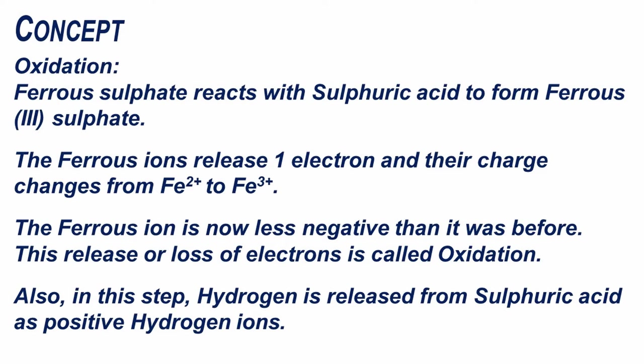Oxidation: Ferrous sulfate reacts with sulfuric acid to form ferric sulfate. The ferrous ions release one electron and their charge changes from Fe²⁺ to Fe³⁺. The ferrous ion is now less negative than it was before. This release or loss of electrons is called oxidation.